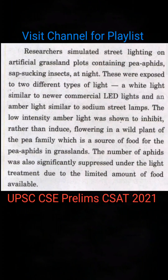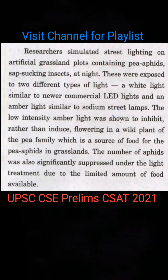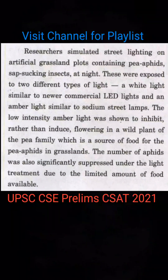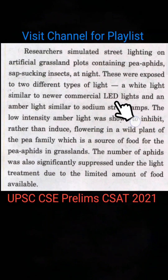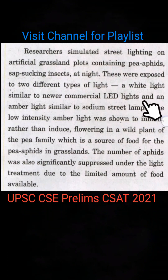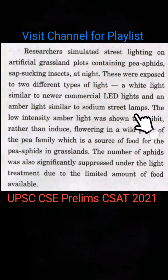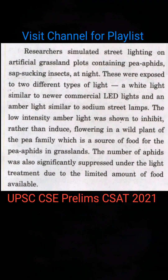These grassland plots were exposed to two different types of light. One was white light, similar to newer commercial LED lights. The other was amber light, similar to sodium street lamps.